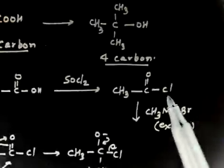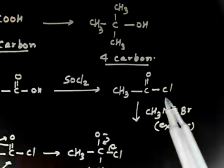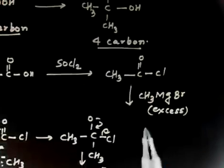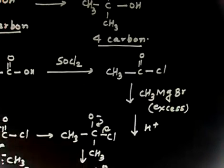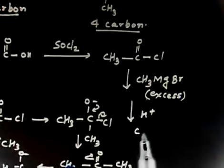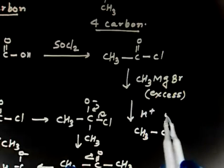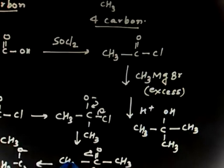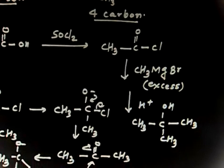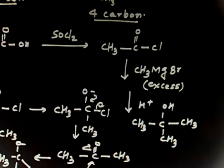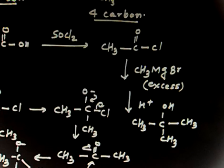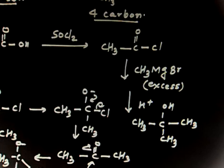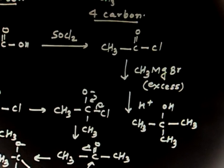So to summarize: first make the acyl halide (acid chloride), then treat with Grignard reagent (CH₃MgBr) in excess, then do acidification. Following these steps gives you finally CH₃C(CH₃)(CH₃)OH — that is tert-butyl alcohol. The mechanism is straightforward: CH₃ attacks, Cl leaves, then CH₃ attacks again to give the final tertiary alcohol product.